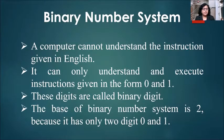The next kind of number system is binary number system. A computer cannot understand the instructions given in English. It can only understand and execute instructions given in the form of 0 and 1. These digits are called binary digits. The base of binary number system is 2 because it has only 2 digits, 0 and 1.